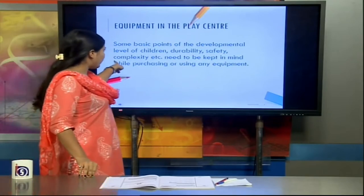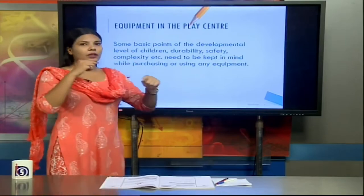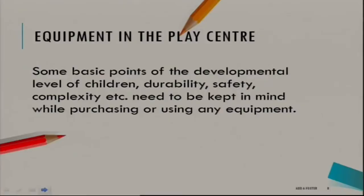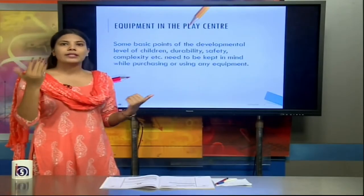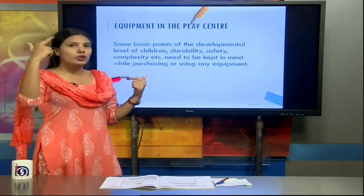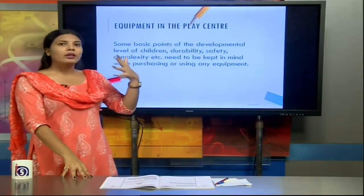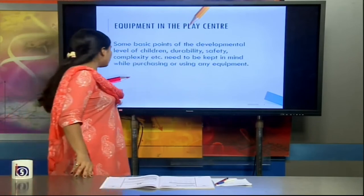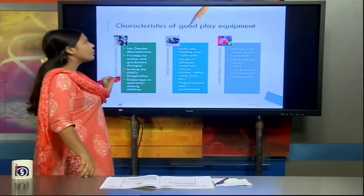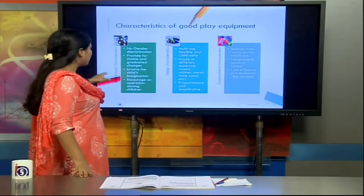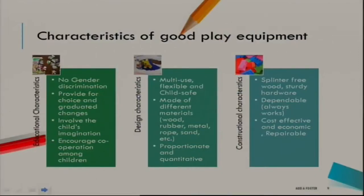Complexity is also important: if toys are always too easy, children will lose interest after a few tries. Toys should increase in difficulty level by level — for example, puzzles come in four-piece and seven-piece versions, so as the child solves simpler ones, more advanced toys can be provided. We will now discuss three categories of characteristics of good play equipment: educational characteristics, design characteristics, and constructional characteristics.